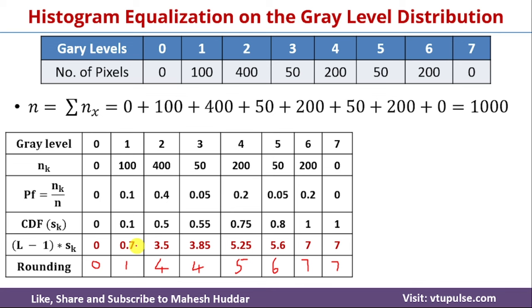We don't have levels 2 and 3 in this case. For level 0, we have 0 pixels. For level 1, we have 100 pixels. For level 4, two original levels map here, so we add them to get 450 pixels. For level 5, we have 200 pixels. For level 6, we have 50 pixels. For level 7, we have 200 plus 0, which equals 200 pixels. There are no pixels in levels 2 or 3.